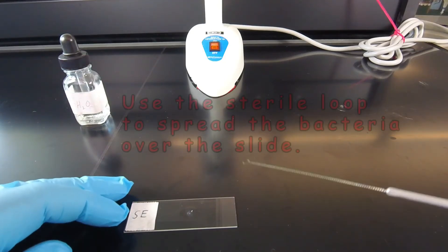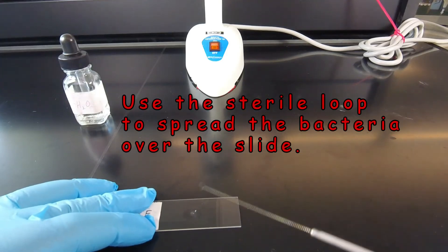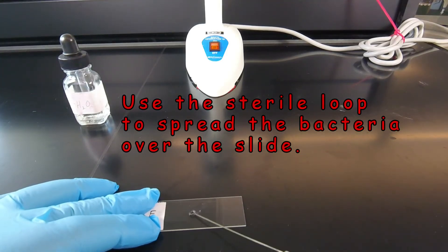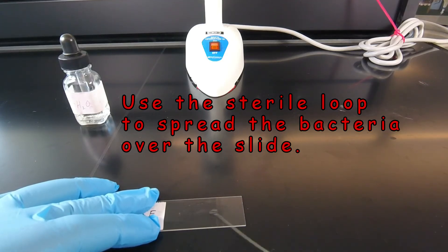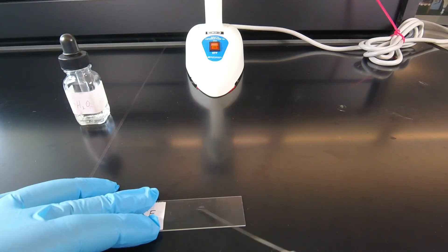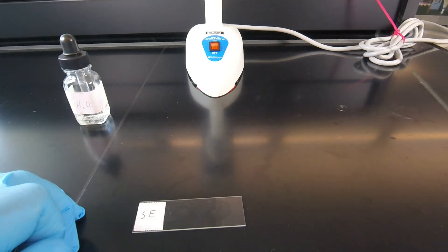So now that the loop is cool, we take our sterile loop and we're going to spread the bacteria that we added to the water over the slide. And notice we're spreading it out over a good portion of the slide. The better we spread it out, the thinner the smear, the faster it's going to air dry and the better we separate the bacteria.